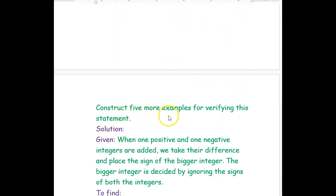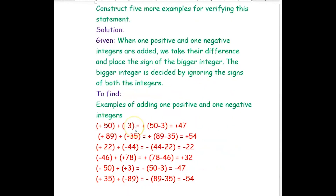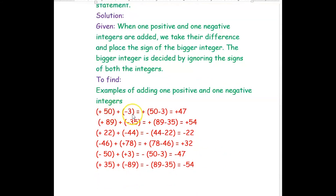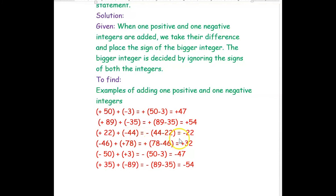Now we construct 5 more examples. The rule: add one positive and one negative integer — take the sign from the greater number and subtract the smaller from the larger. Example 1: positive 15 plus negative 3 — bigger is 15, sign is positive, 15 minus 3 is 12, result is positive 12. Example 2: positive 89 plus negative 35 — bigger is 89, result is positive 54. Example 3: positive 22 plus negative 44 — bigger is 44, sign is negative, 44 minus 22 is 22, result is negative 22.